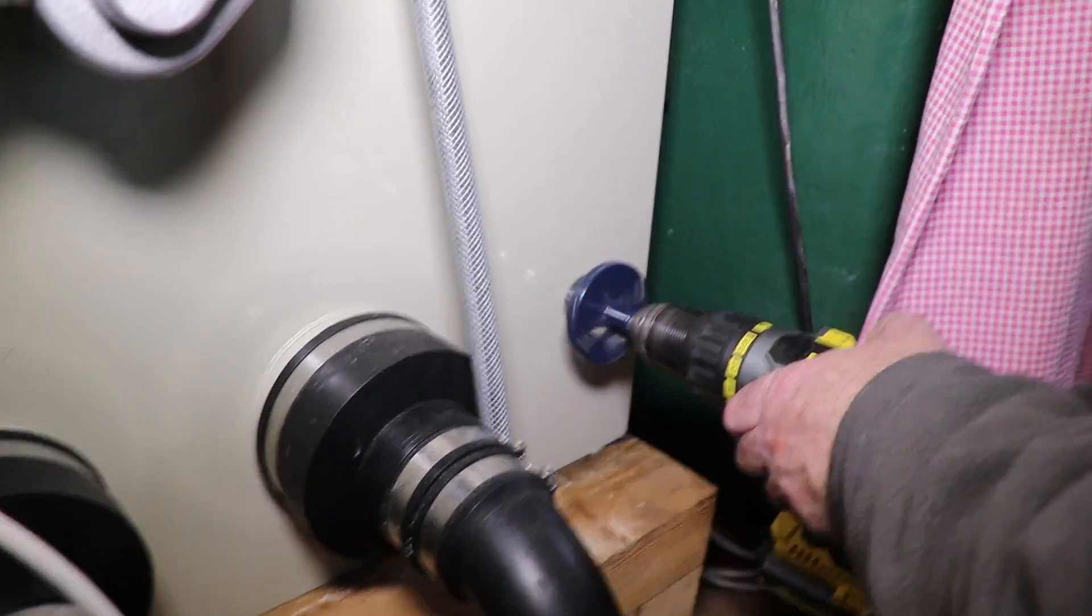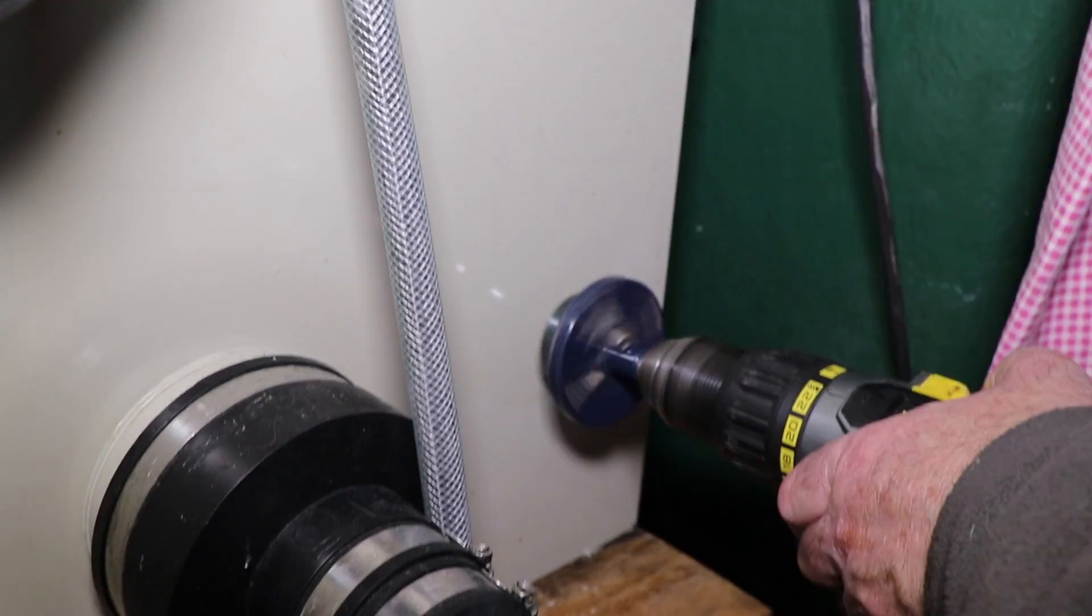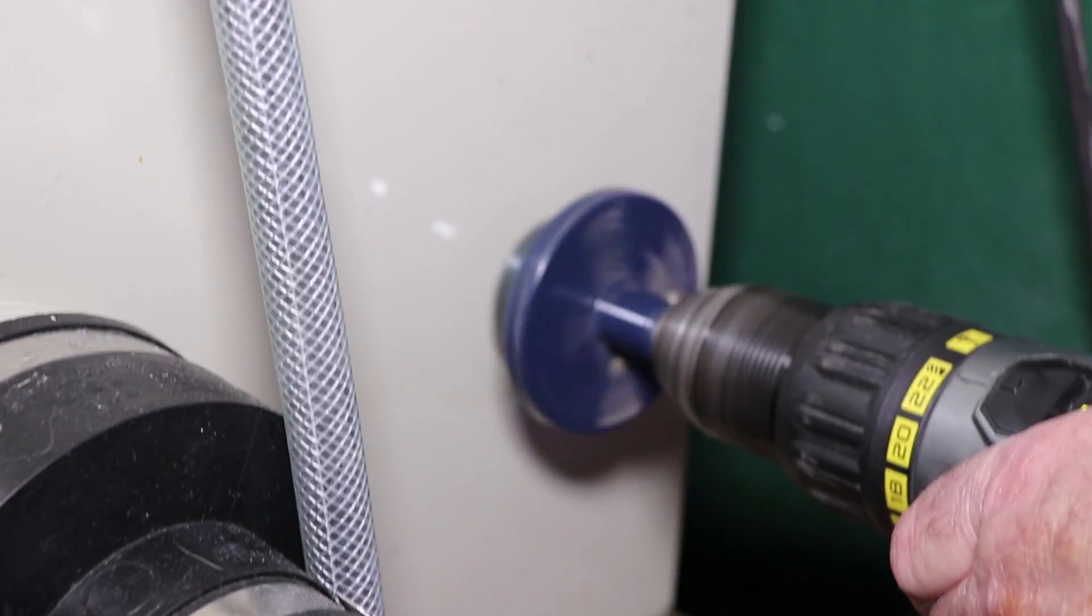So here we are with actually boring the hole in the side of the drum filter that the UV light will eventually fit through.